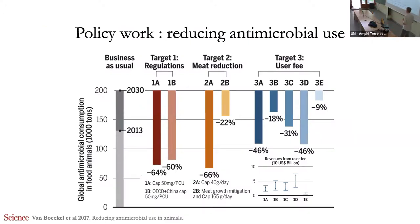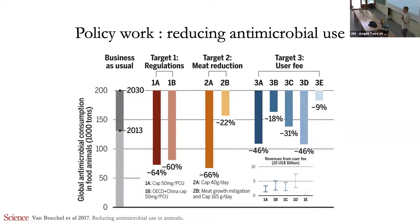Beyond traditional papers, we also try to propose policy options to manage resistance. For example, if we were to cut antibiotic use to the median European level — about 50 milligrams per kilogram of meat produced — we could cut world antibiotic consumption by 64%. As long as China is part of the deal, we could exclude all other low and middle-income countries and get almost the same effect, making a strong argument for a treaty between China and OECD countries on antibiotic use. We could also do a lot by limiting meat consumption to 40 grams per day — one slice of meat, the amount in a Big Mac — and still reduce antibiotic use by two-thirds.